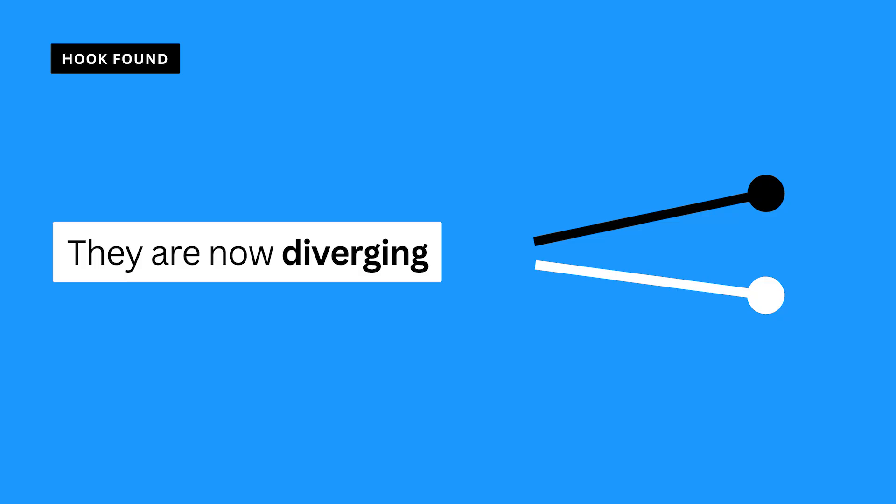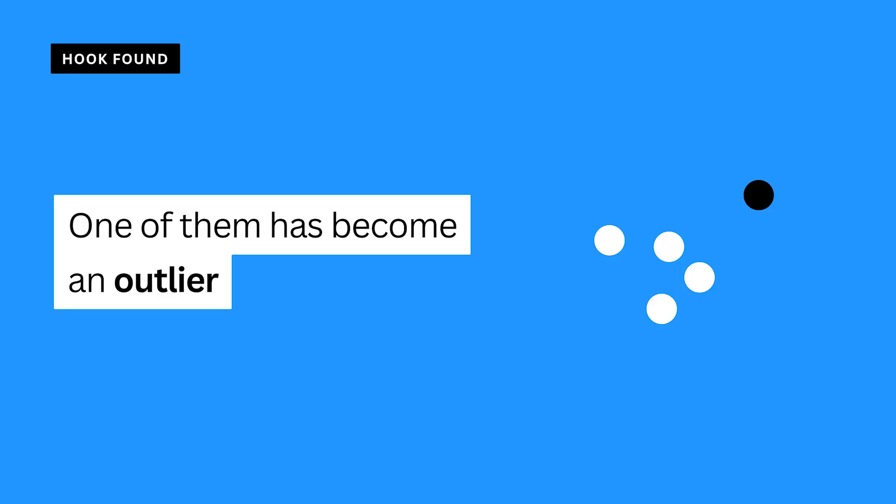Converging to diverging: if data points that were coming together are now splitting apart, it could signal a change in what your customers want or how your operations are running. Maybe an outlier pops up — an outlier might just be a mistake, or it might be something super interesting that deserves a closer look. Once you've pinpointed these elements, you're ready to turn your findings into an engaging data story.